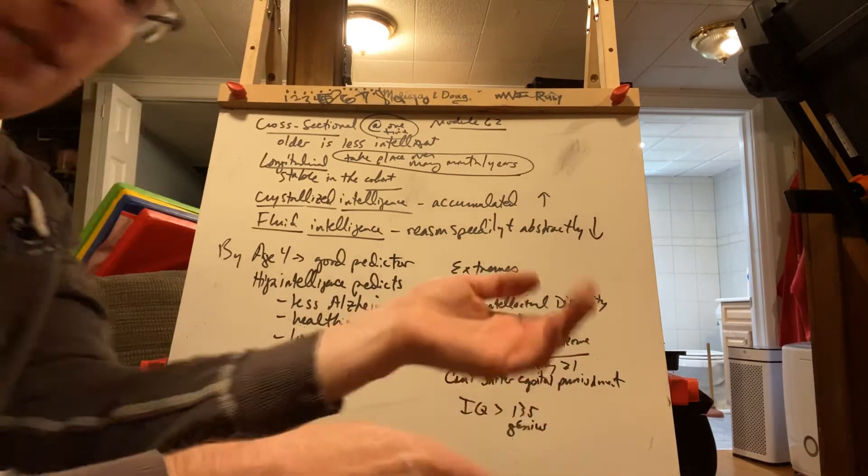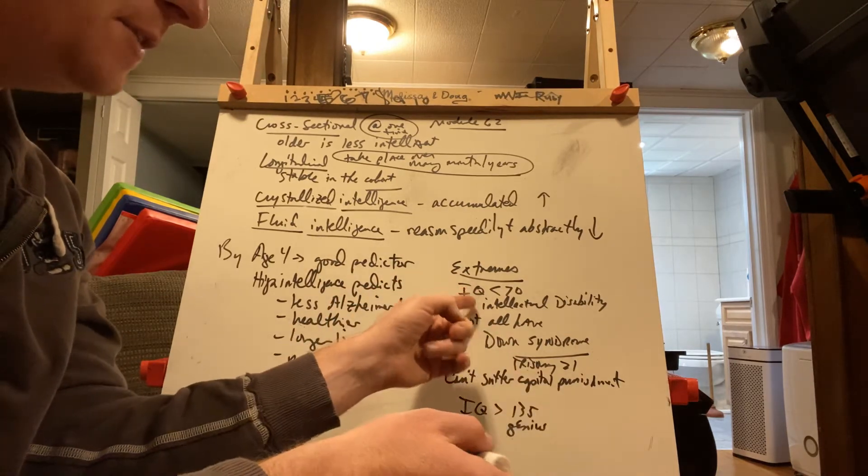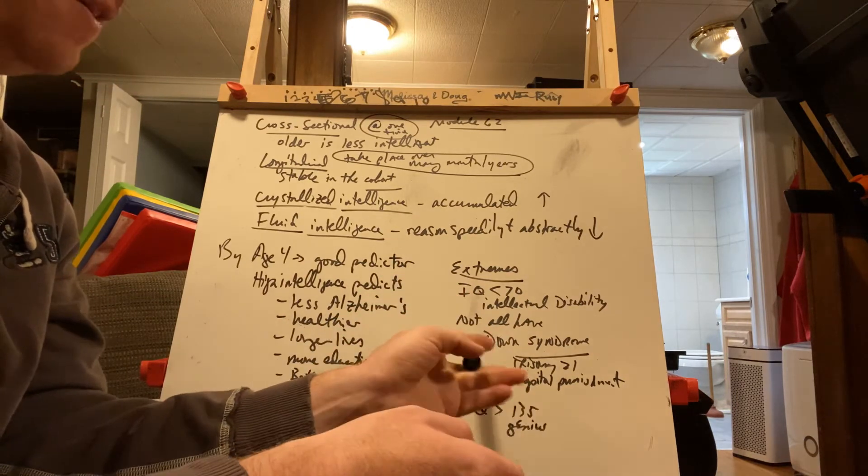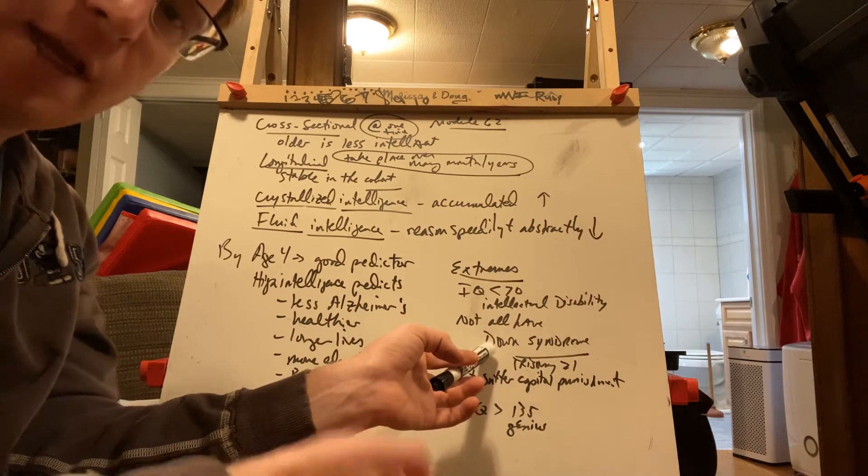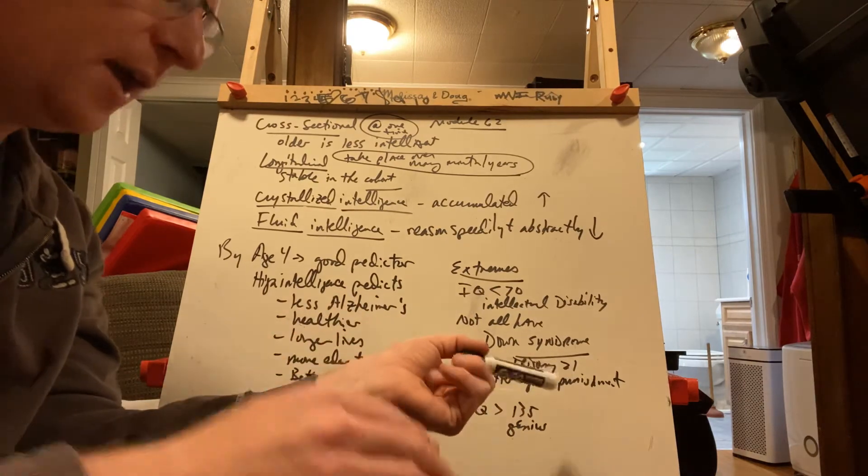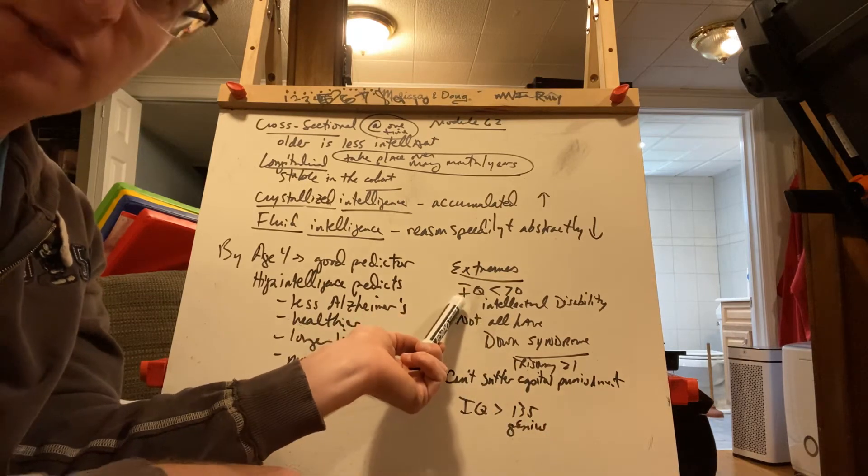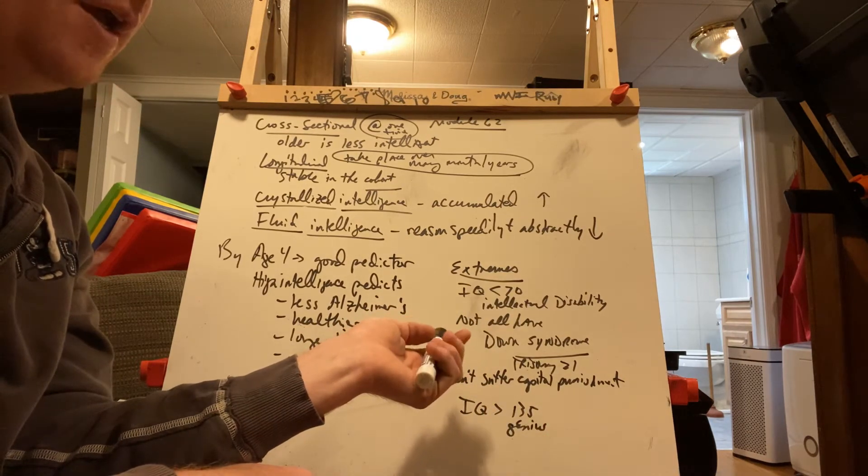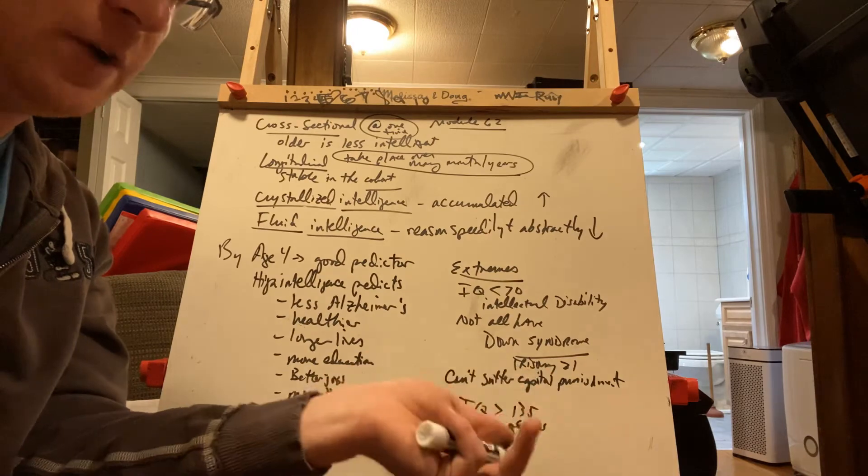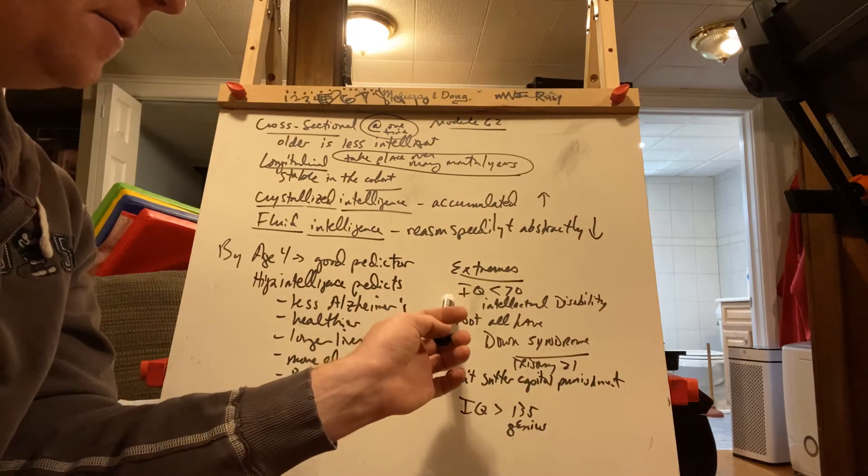On the extremes, if you have an IQ score of less than 70, that indicates an intellectual disability. It doesn't mean somebody with an IQ of less than 70 has Down syndrome. Most people with Down syndrome have an IQ of less than 70, but not necessarily. There are many more people that don't have Down syndrome that have an IQ of less than 70. It usually just means a learning disability, maybe they're easily distracted, or some form of autism spectrum disorder can also have this.